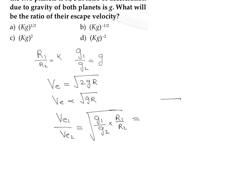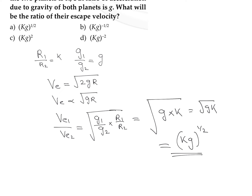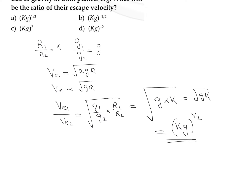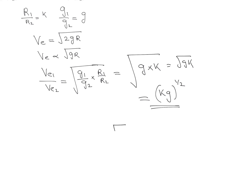We can write this as the square root of g times (r1 divided by r2), where r1 divided by r2 is nothing but k. So we can write it as the square root of g times k, or (kg) raised to the power 1/2. Remember that kg raised to 1/2 means nothing but the square root of kg, since the square root of x can be written as x raised to 1/2.